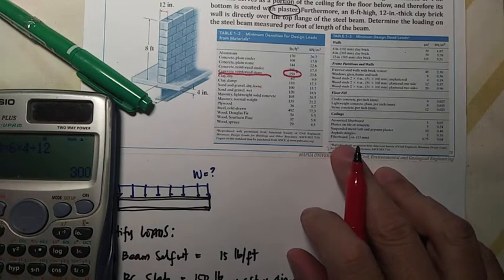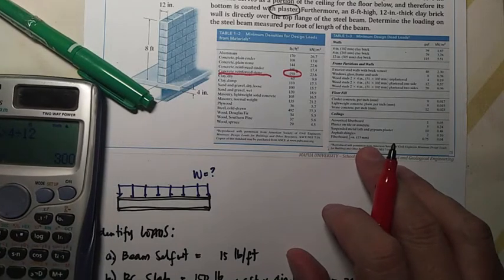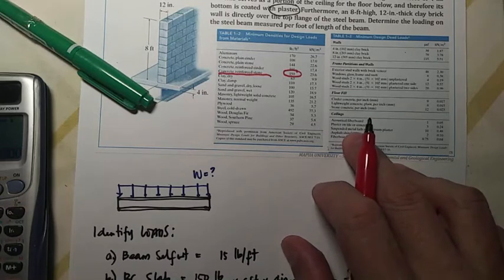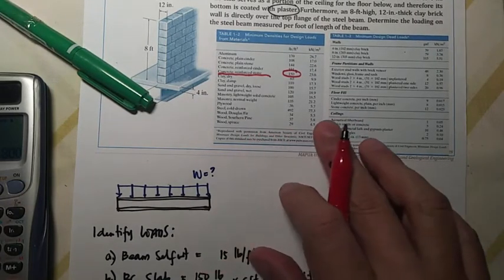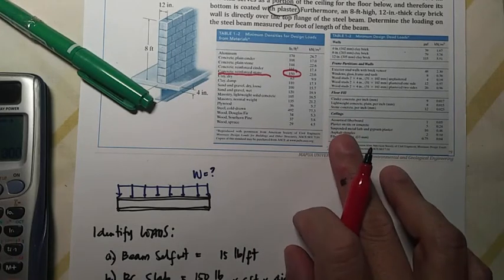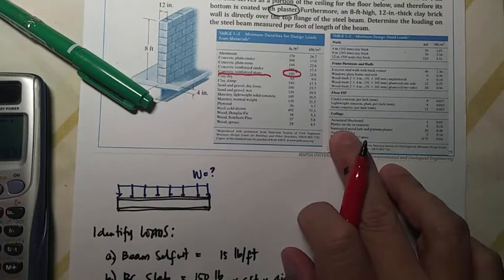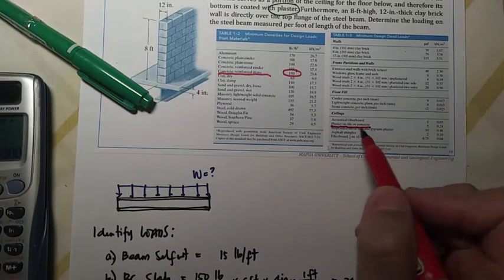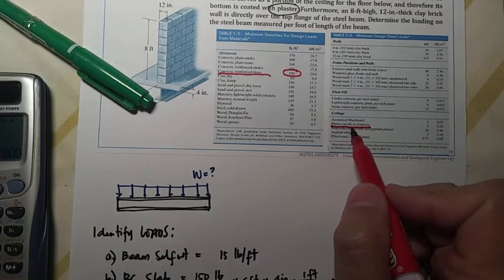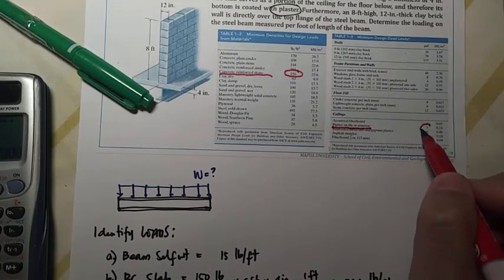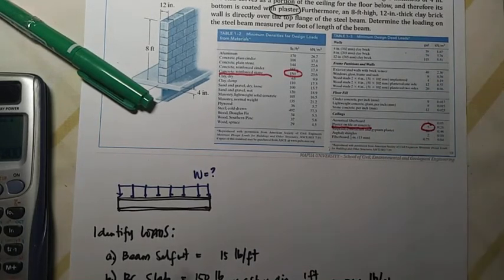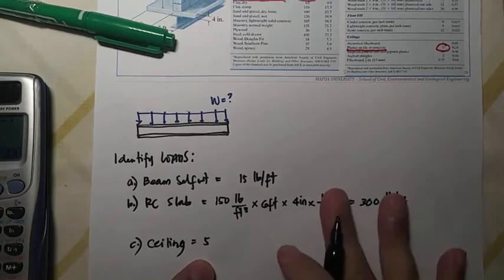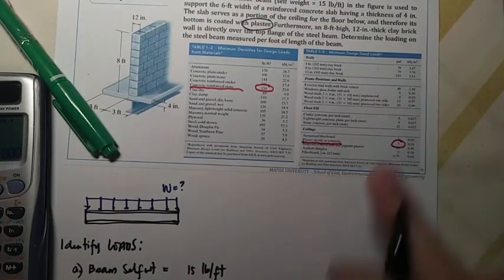This is another table that gives us the minimum design dead loads. We have for walls, frame partition and walls, floor fill and ceiling. This is the ceiling, let's find the plastering. Okay, so we have fiber board plaster on tile or concrete. So plaster on concrete, that is 5 pounds per square foot.